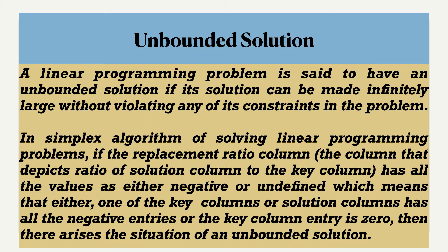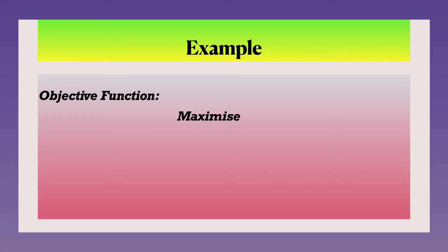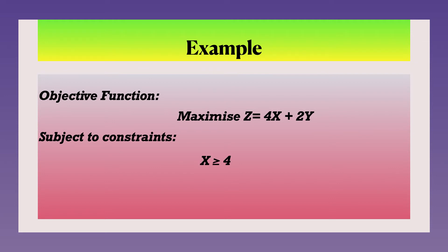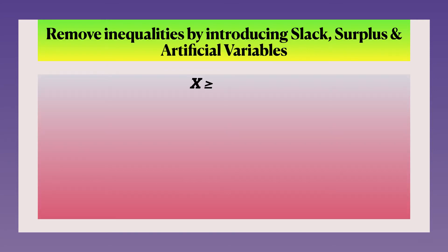For unbounded solution, let us discuss in a little more detail with the help of an example. Our example is: maximize Z = 4x + 2y, subject to constraints x ≥ 4 and y ≤ 2, and both variables are greater than or equal to 0 (non-negativity constraint). In the next stage, we remove the inequalities by introducing slack, surplus and artificial variables. We have both types of constraints, so all three types of variables will be introduced.